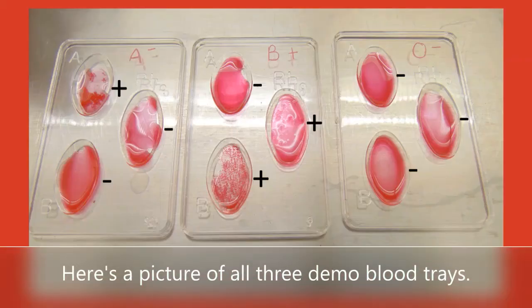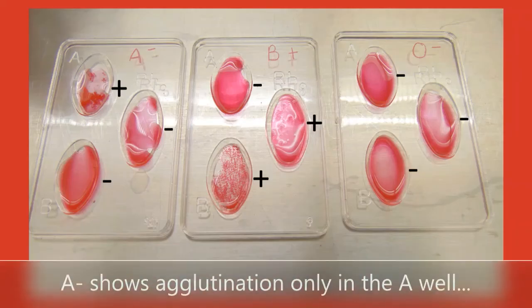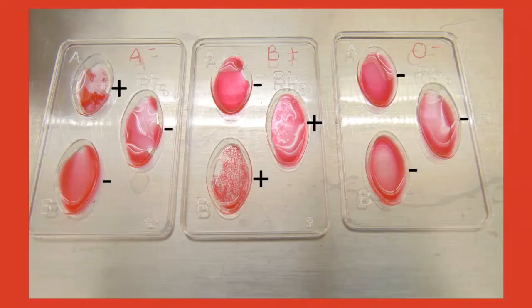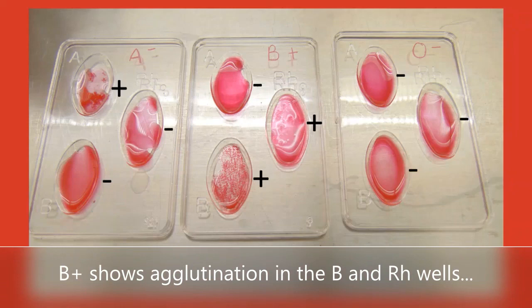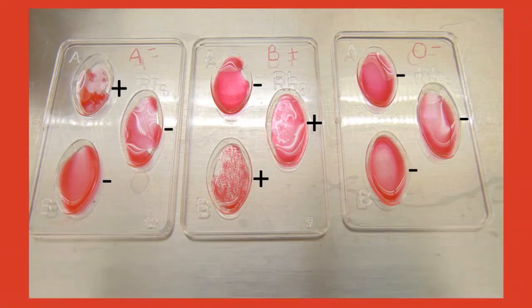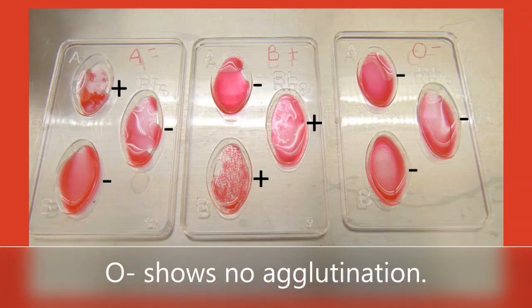Here's a picture of all three demo blood trays. A negative shows agglutination only in the A well. B positive shows agglutination in the B and RH wells. O negative shows no agglutination.